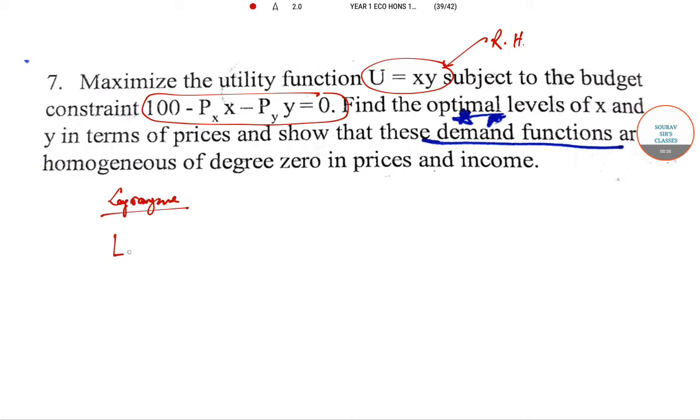So in Lagrangian format you write L equals XY plus lambda times the budget constraint, which is 100 minus PX·X minus PY·Y.